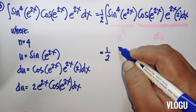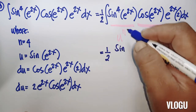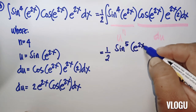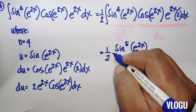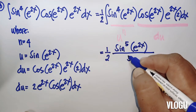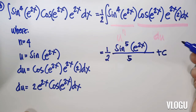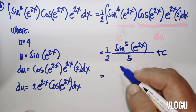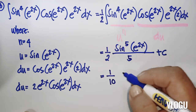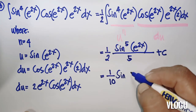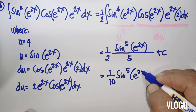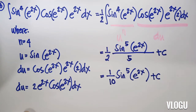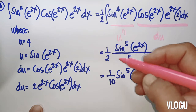We have (1/2) times sine to the fifth(e^(2x)) over 5, plus C. Therefore our final answer equals one over 10 times sine to the fifth(e^(2x)) plus C.